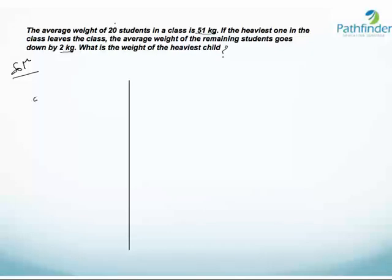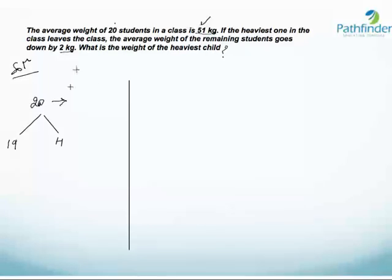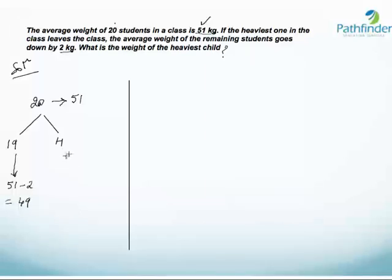The deviation has to be determined from the total number of students, which is 20. This group of 20 students is divided into two parts: one is the heaviest child, represented by h, and the other is the remaining 19 students. The average weight of 20 students is given as 51 kg. When one student leaves, the average goes down by 2 kg, so the average of the remaining 19 students is 51 minus 2, that is 49 kg. We assume the weight of the heaviest child to be x.